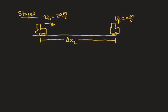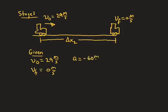Our givens here are: initial velocity, which is 29 meters per second; final velocity, which is 0 meters per second; acceleration, which is given as negative 60 meters per second squared; and we're looking for delta x in stage 2.